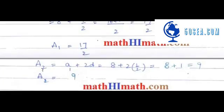A2 is basically the third term. In the third term you find the first term plus two times d. So the first term is 8 plus 2 multiplied by 1/2. 2 and 2 cancel, so 8 plus 1 equals 9. So A2 equals 9.